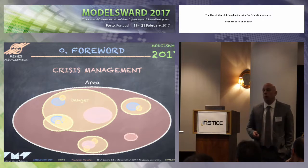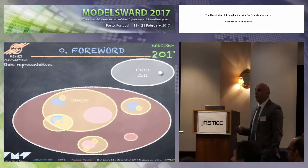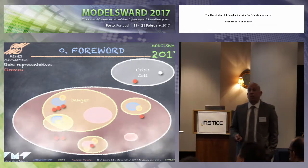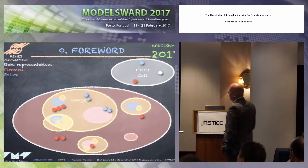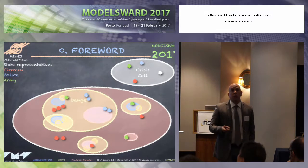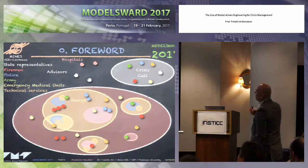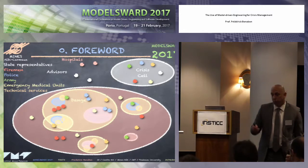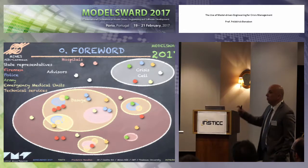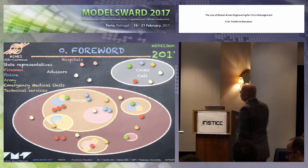Crisis management is mainly about having crisis cells, potentially several, with different stakeholders, different actors — just like state representatives, policemen, firemen — and on the crisis site, potentially the army, technical services, and emergency medical units. All these people should also collaborate with advisors, just like scientists or experts. There may also be some specific places not on the site, like hospitals, for example. All these people should work together.